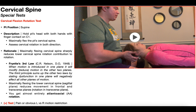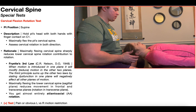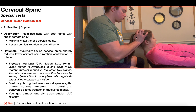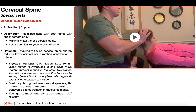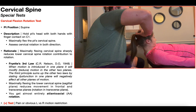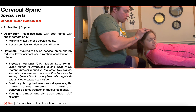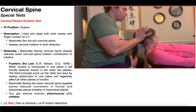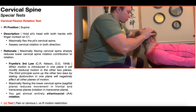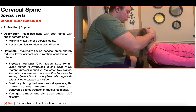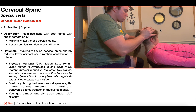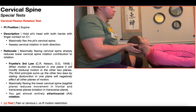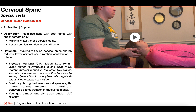From here, you're going to maximally flex the patient's cervical spine — bring up all cervical flexion, like you see here. Then you're going to assess cervical rotation in both directions. Rotate right, which is specifically assessing atlanoaxial rotation to the right. Then go back to neutral and assess rotation left, specifically looking at left atlanoaxial rotation. A positive test is going to be pain provocation in either direction or an obvious left versus right rotational motion restriction.